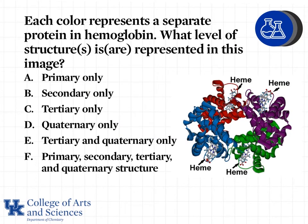One example of a protein that has to have quaternary structure to function is hemoglobin. There are four regions of hemoglobin that are made up of four separate polypeptide or amino acid chains. Each color represents a separate region in hemoglobin. We have one region in red, a region in purple, a region in green, and a region in blue.